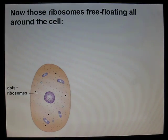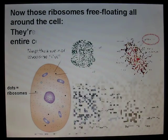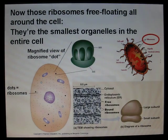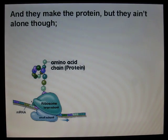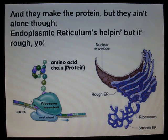Now those ribosomes are floating all around the stuff — they're the smallest organelles in the entire cell, and they make the protein. But they ain't alone though — endoplasmic reticulum helps them, but it's rough, yo.